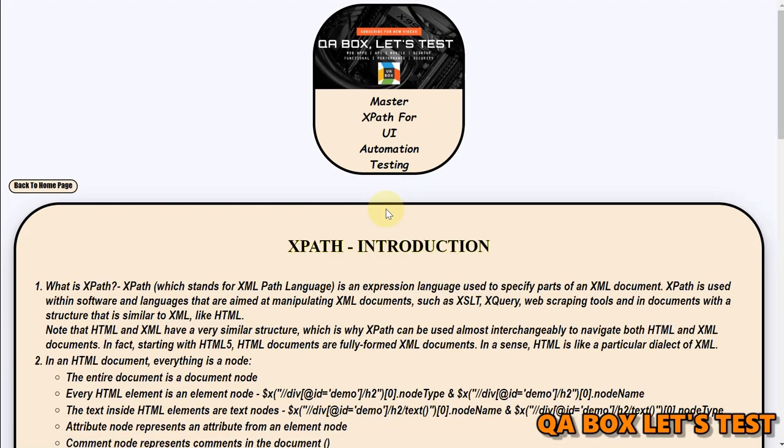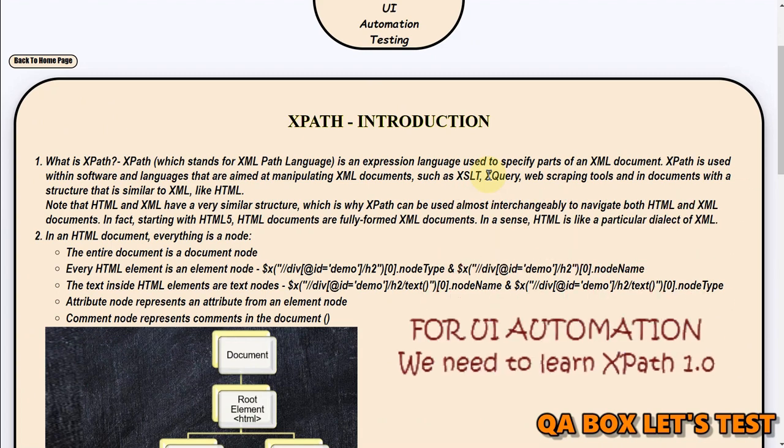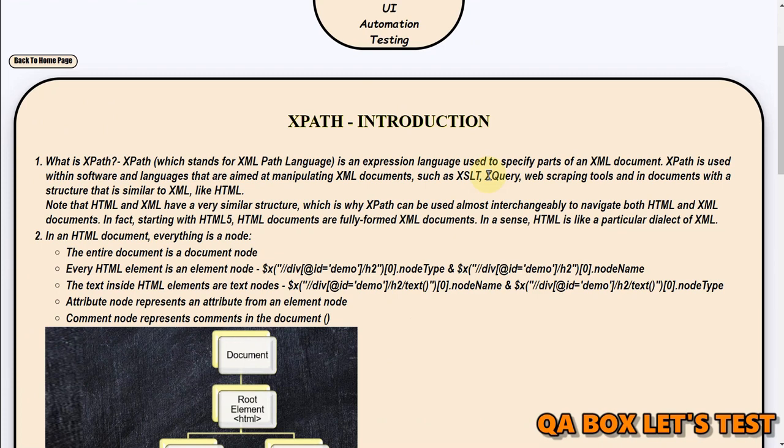So the first thing is XPath. What is XPath? XPath basically stands for XML path language. XPath is an expression language used to specify parts of an XML document. XPath is used within software and languages aimed at manipulating XML documents such as XSLT and XQuery, and also in web scraping tools. Then XPath comes to the rescue when all those attributes are missing like ID, class and there's nothing to help us.